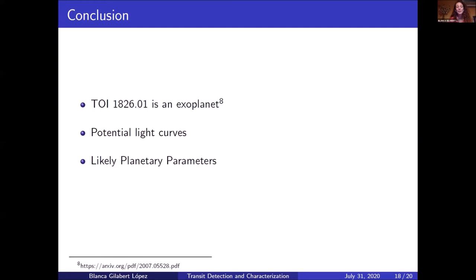As a conclusion, we'd like to say that our candidate exoplanet that we chose, which is also known as TOI 1826.01, is effectively an exoplanet, not only because it's been recently proven, but because it has potential light curves and likely planetary parameters that reinforce our hypothesis.